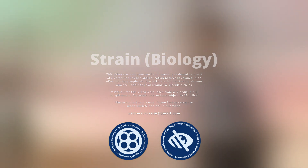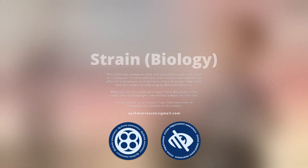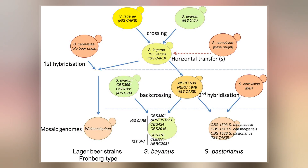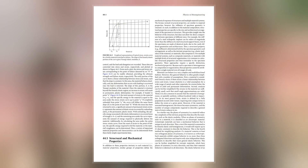In biology, a strain is a genetic variant, a subtype or a culture within a biological species. Strains are often seen as inherently artificial concepts, characterized by a specific intent for genetic isolation.